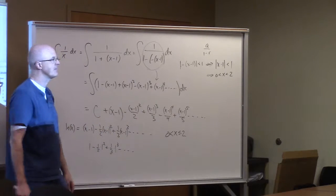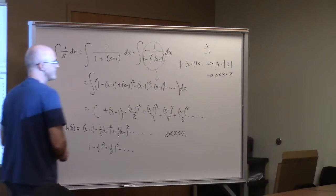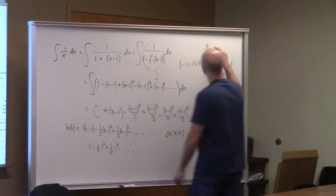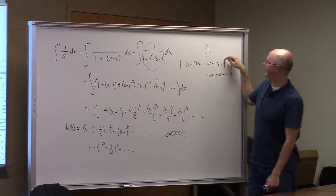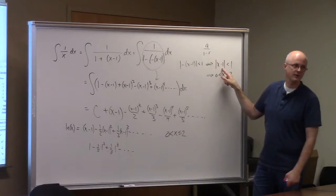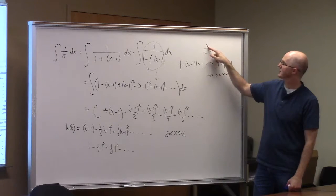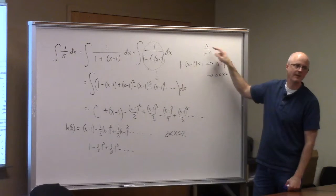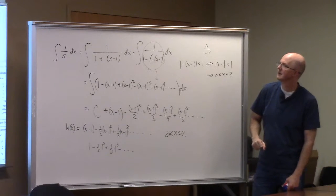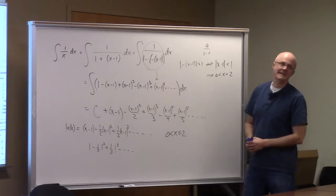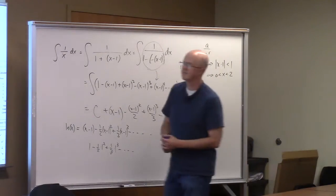A student asks for clarification: the 'a' in the Taylor series formula — where we're centered — is not the same as the 'a' in the geometric series formula a/(1−r). In this case they happened to both equal one, but in general they're different. Thanks for pointing that out.